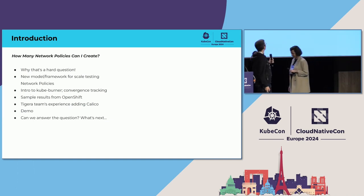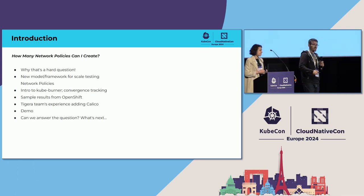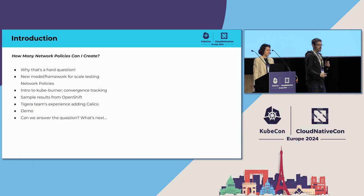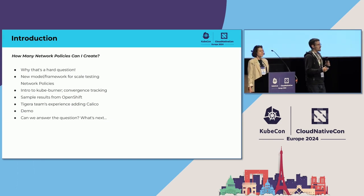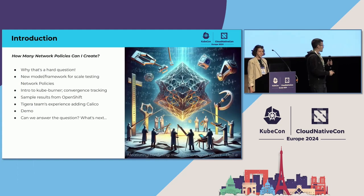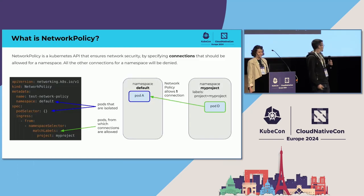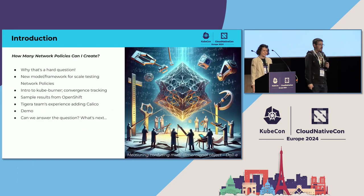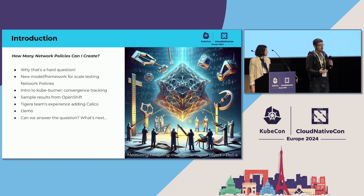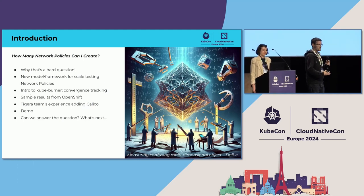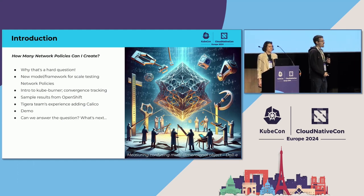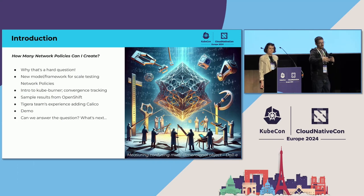Today we're going to try and answer this question: how many network policies can I create? Nadia has the first half of this talk. She's going to take you through why that's a difficult question, introduce you to her new model and framework for scale testing network policies, and explain the problem with measuring confusing multi-dimensional objects — these network policies we're dealing with. She'll introduce CubeBurner and the convergence tracking approach, then show sample results from OpenShift. Then I'll introduce Tigera's part, give a demo of testing, and we'll circle back to wrap up.